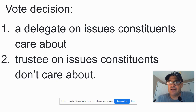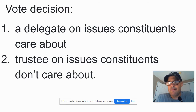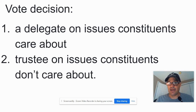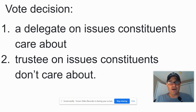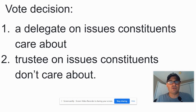So a Politico is going to play what's best for them in terms of getting elected. We've got delegate — I'll do what you guys want. We've got the trustee model — I appreciate your viewpoint, but you elected me, so trust me. And then we've got the Politico who's like: they really care about this, I'm voting that way; but they don't really care about this, so I'll vote the way I want.